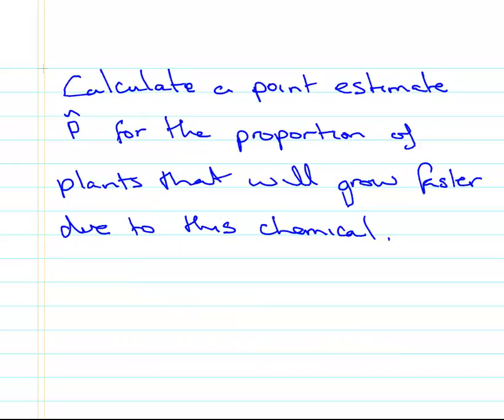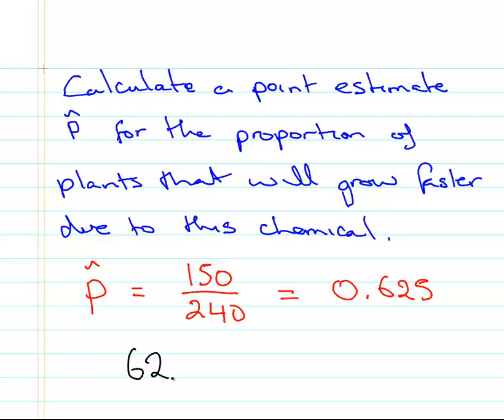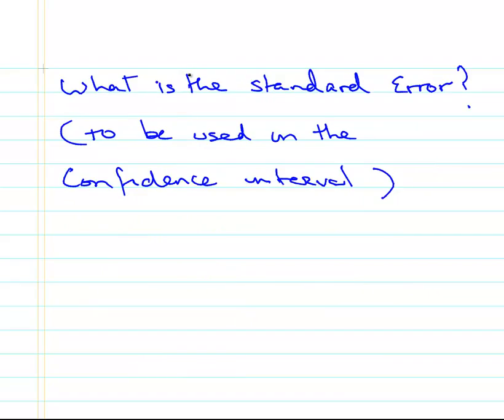Calculate a point estimate, p-hat, for the proportion of plants that will grow faster due to this chemical. P-hat is 150 over 240, and that is, using a bit of calculator work, 0.625. If you decide to use percentages, you would have 62.5%. That's the calculated point estimate, that will be the first question there.